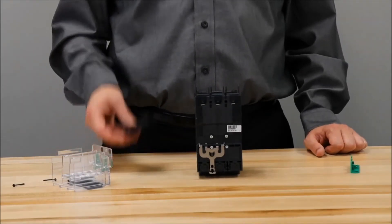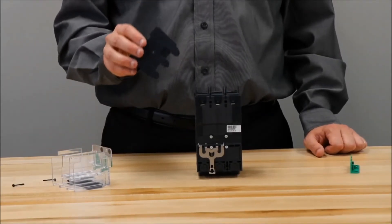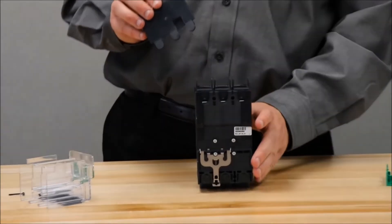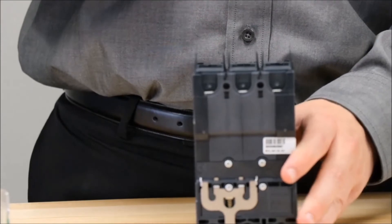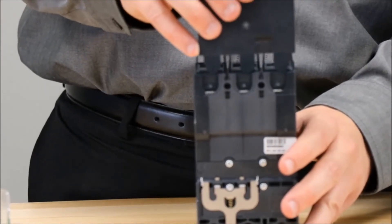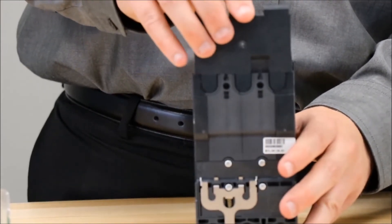You will now slide the back of the long terminal cover into the breaker by using the small tabs that are on the sides of the back that will slide into grooves on the back of the breaker, like so.